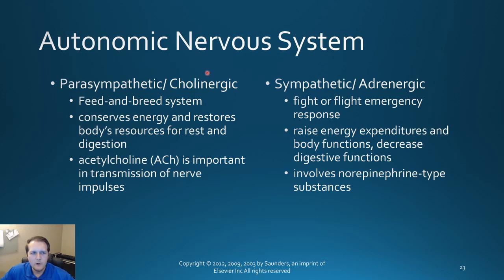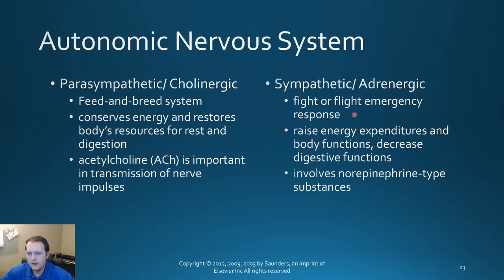In terms of the autonomic nervous system, we have basically a parasympathetic and then a sympathetic nervous system. The parasympathetic system is your feed and breed system, or rest and digest. Acetylcholine is the most important neurotransmitter here, mainly working on what we call muscarinic receptors. On the sympathetic side, this is your fight or flight response — things that help to increase energy expenditure, blood glucose goes up, cortisol levels go up. It will decrease things like digestive functions because if you're in a scary scenario you don't want to worry about digesting your food; you want to be able to run away. This is going to involve norepinephrine and epinephrine as the most common things associated with the sympathetic nervous system.